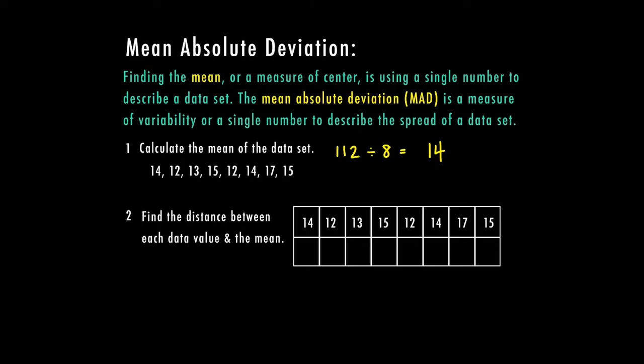So the distance between 14 and 14 is 0. The distance between 12 and 14 is 2. 13 to 14 is 1. 14 to 15 is 1. 12 to 14 is 2, 0. 17 to 14 is 3. And 15 to 14 is 1. Now because it's absolute value our distances are always going to be positive.